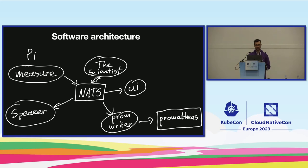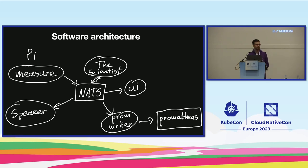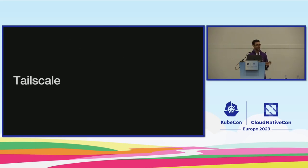Back to the software architecture. I ended up with a microservices approach on the Raspberry Pi: two components — Measure and Speaker — that do the actual measurements and speak the announcements, and then the Scientist (a Coldplay song) that does the thinking for the whole project. It decides: should we play music, should we update the user interface, should we send to Prometheus? The Measure and Speaker components have to live on the Raspberry Pi; the others can live wherever on the same subnet, which I handle via Tailscale.